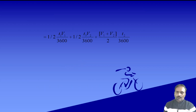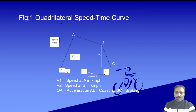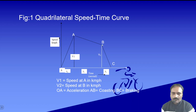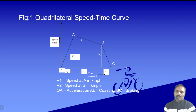The total area of the quadrilateral can be divided into three segments: the area of the first large triangle, the area of a smaller second triangle, and the area of a trapezoid. The first part is the area of the big triangle, equal to half times base t1 (converted to hours by dividing by 3600) times height v1.